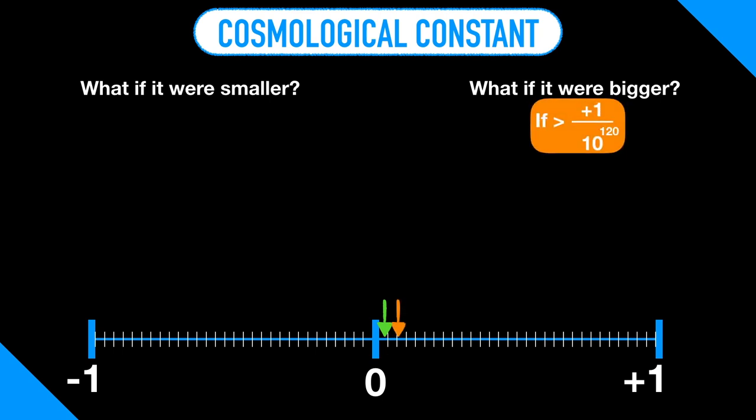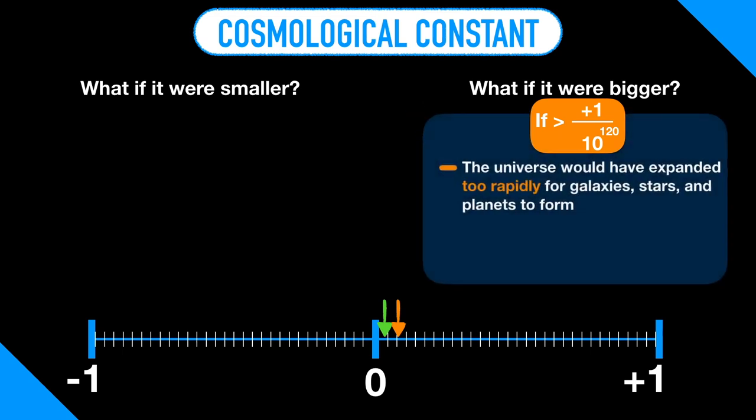He says, if it were 1,000 times bigger than it actually is, which is bigger than about 1 over 10 to the 120th, then the universe would have expanded too rapidly to form galaxies, stars, and planets. That's a problem because all the chemical elements except the three simplest ones, hydrogen, helium, and lithium, only get produced in stars.